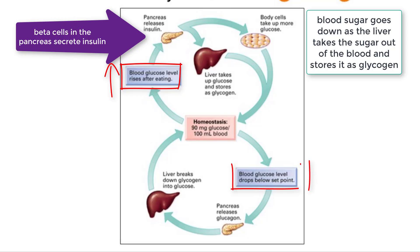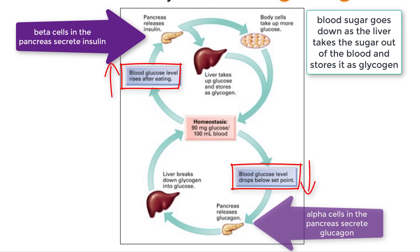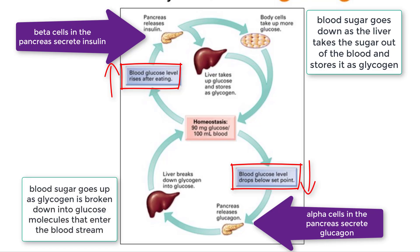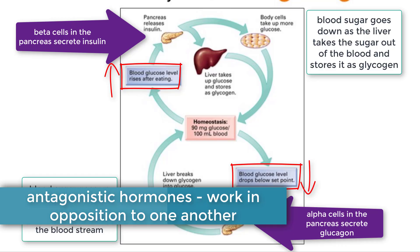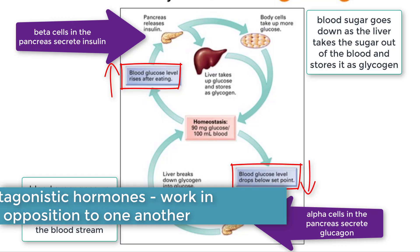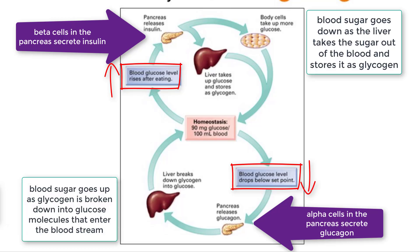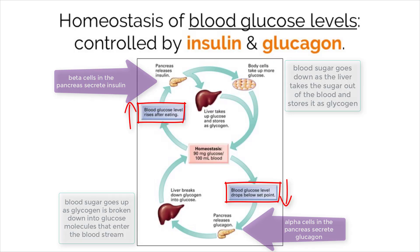When blood sugar gets too low, pancreatic alpha cells secrete glucagon, which sends a signal to the liver to break down the stored glycogen and release it into the bloodstream, where it can be circulated and used for energy by cells. The balancing act of these two antagonistic hormones working in opposition to one another is what keeps your blood sugar concentrations within the working threshold, thereby maintaining homeostasis. An extreme rise or dip in blood sugar can be very dangerous, which is why these hormones are extremely important.